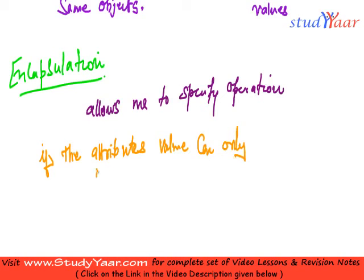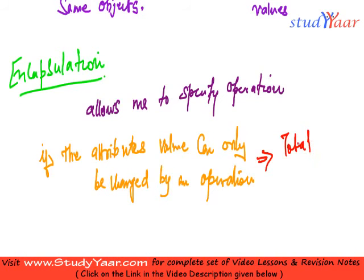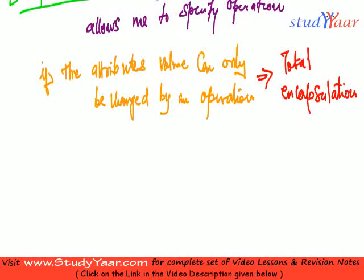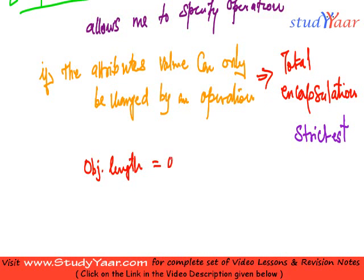So when attribute values can only be changed by an operation, what we have is total encapsulation — the strictest form of encapsulation. In that case, you cannot do something like `object.length = object.length * 1.1`. What you would have to do is call `object.expand`. That is correct.